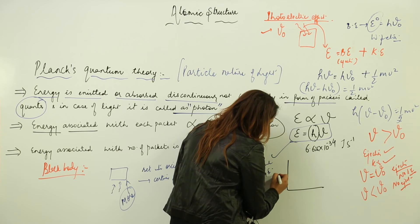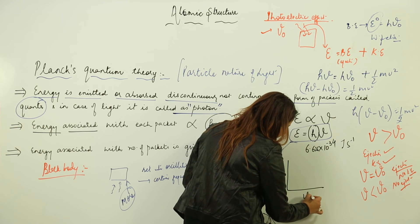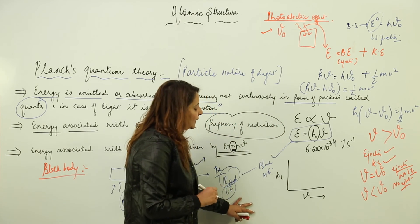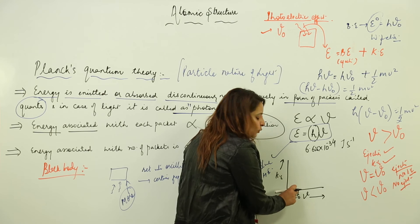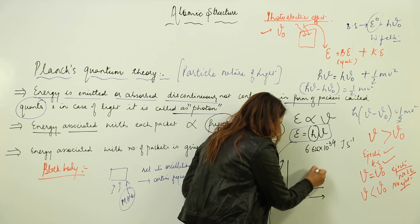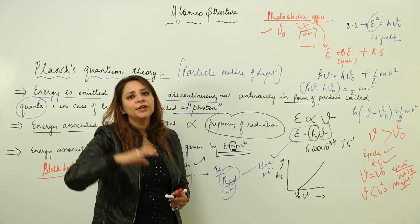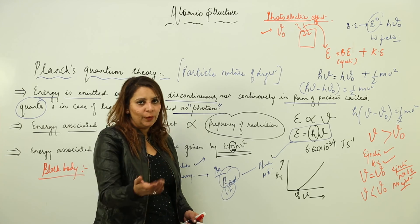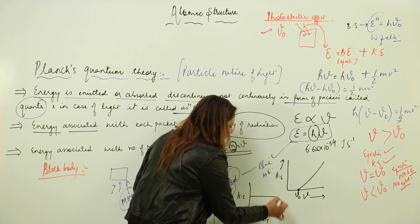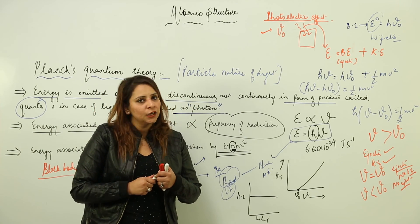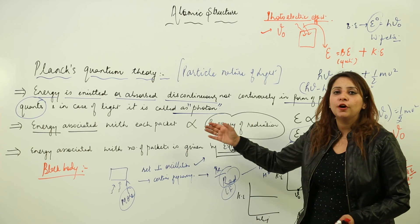To explain graphically: if we draw a graph between kinetic energy and frequency, up to ν₀ the energy is used as binding energy. After ν₀, the remaining energy is given as kinetic energy, so kinetic energy increases with increase in frequency beyond ν₀. If you draw a graph between kinetic energy and intensity, it remains unaffected because kinetic energy depends upon frequency, not on intensity.